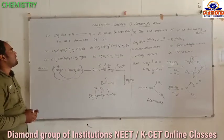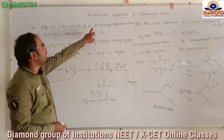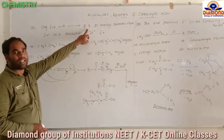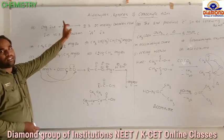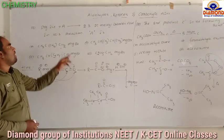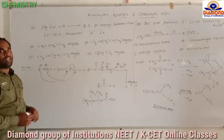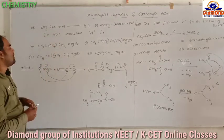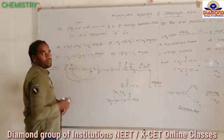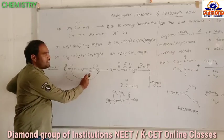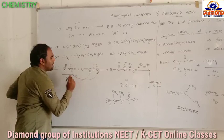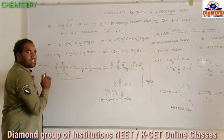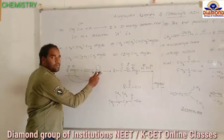Dry ice reacts with A and forms 2,3-dimethylbutanoic acid. The question is: what is A in this reaction? Dry ice is nothing but carbon dioxide, CO₂. When carbon dioxide reacts with a Grignard reagent (R–MgX), the oxygen in CO₂ is more electronegative, so the double bond shifts toward oxygen. The R⁻ from the Grignard reagent attacks the carbon⁺, forming an intermediate with R–C(=O)–O⁻–MgX. This intermediate undergoes hydrolysis with water, where H⁺ adds to O⁻, converting it to carboxylic acid.